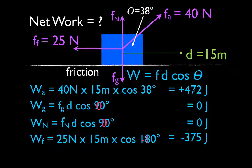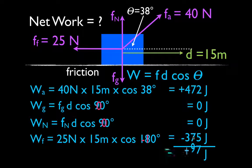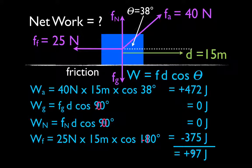The applied force puts energy in. The gravitational force and the normal force do no work. The friction force takes energy out, and therefore the net work done on the object is 97 joules. This is the net work — if we just add all those up, we get the net work.